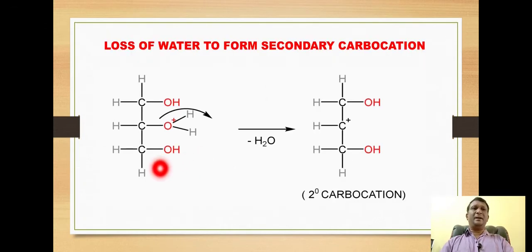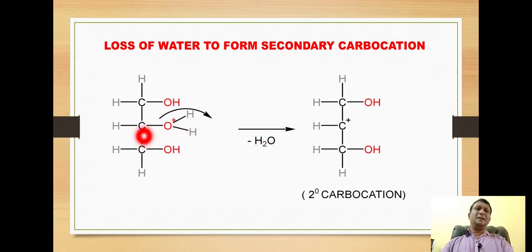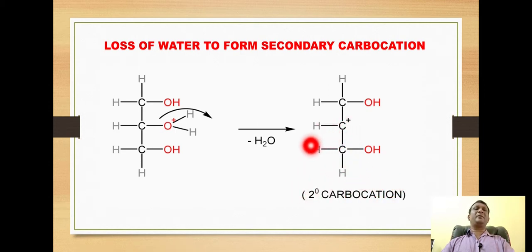As soon as the water molecule is formed it is released from the molecule. When the water molecule is lost, the electron pair of the carbon-oxygen bond is taken by the oxygen, and this carbon becomes deficient in a pair of electrons — it is surrounded with only six electrons. This represents a secondary carbocation, because this carbon is attached directly to two other carbons. The ease of formation of carbocation follows the sequence tertiary, then secondary, then primary. So initially a secondary carbocation is formed.